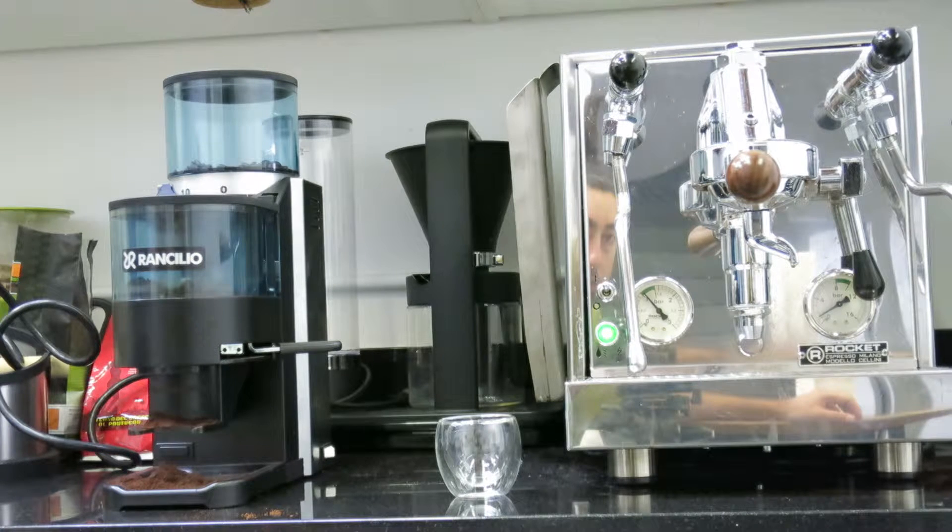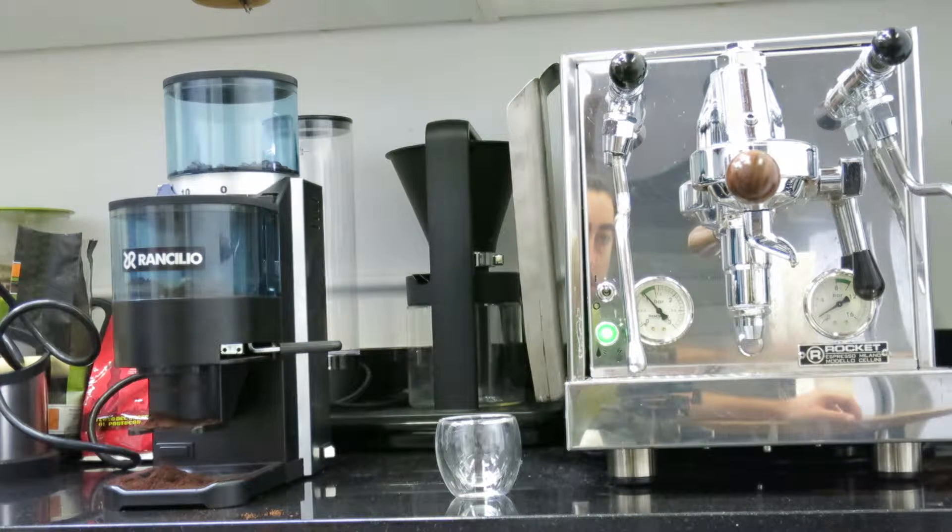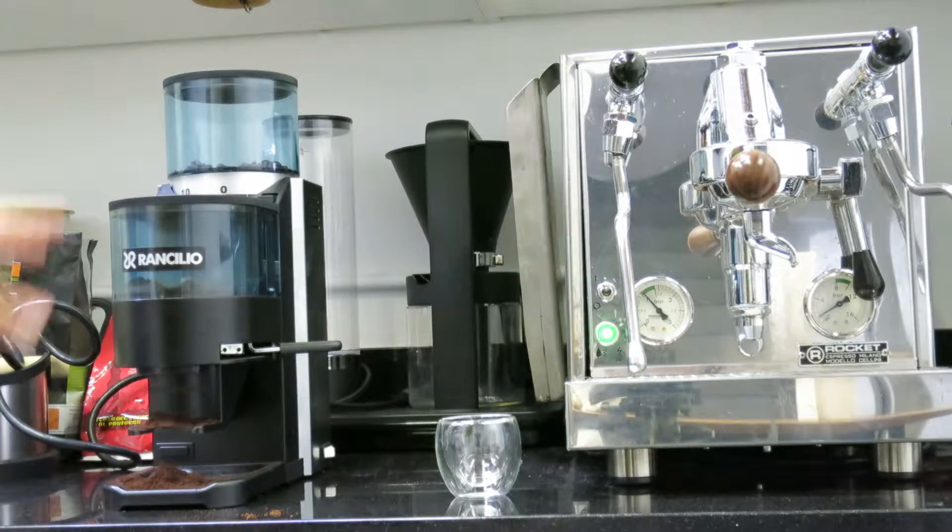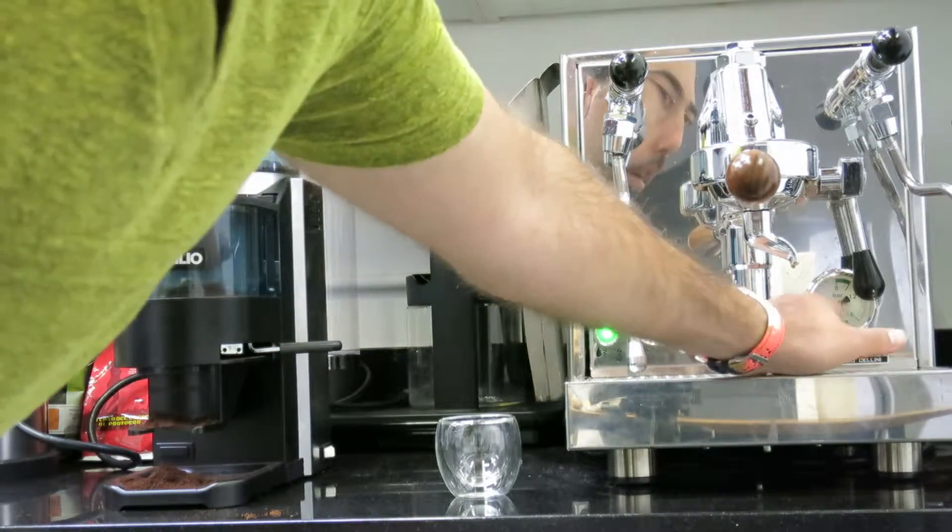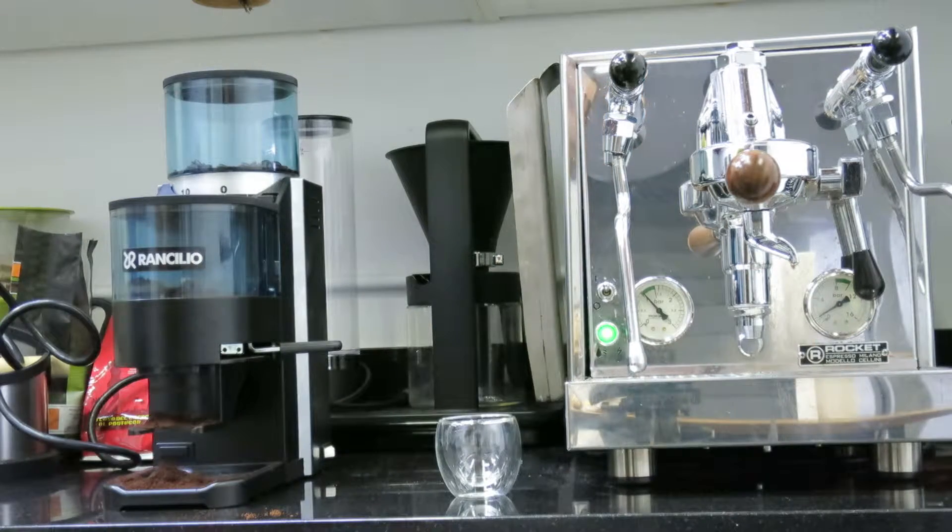I want to demonstrate how we pull a shot with this Rocket Espresso Machine. We have this guy set to the lowest and then over here we have the pressure gauge. We'll give it a try, so let's see.